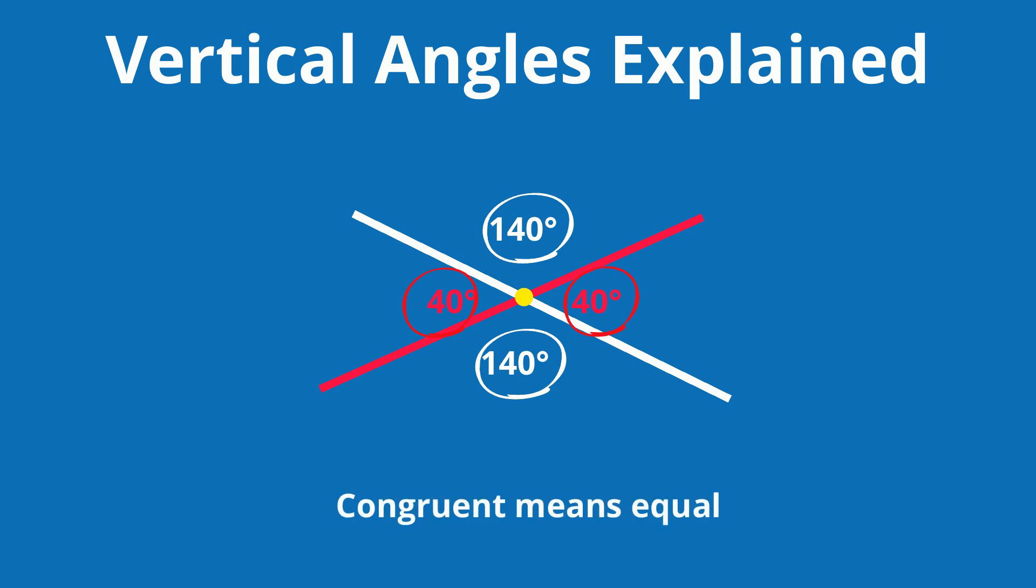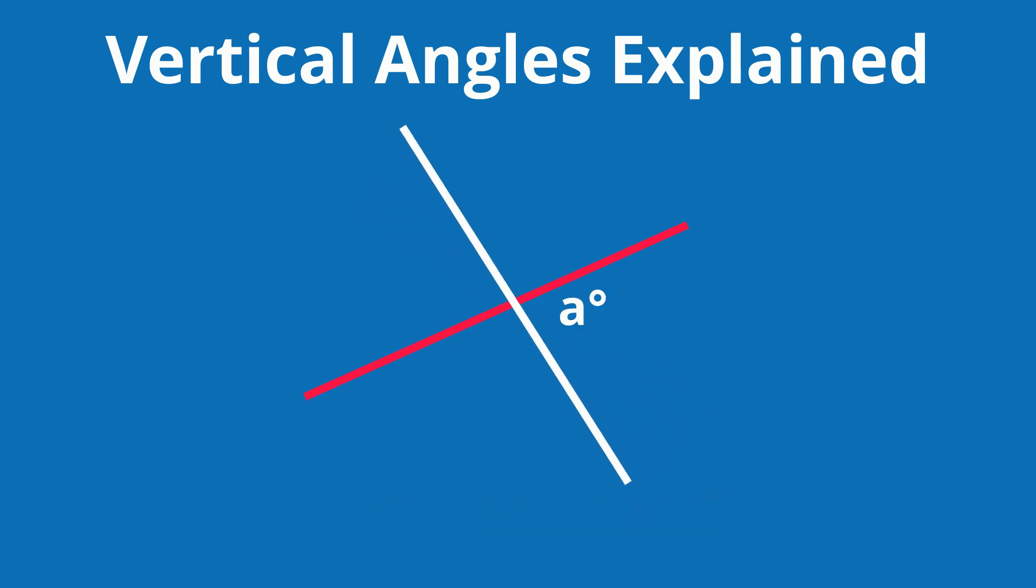In this example A and B are vertical angles. The vertical refers to the vertex where they cross which is labeled C, not up and down.